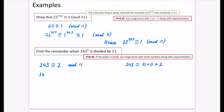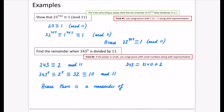So 343 to the power of 5 is congruent to 2 to the power of 5. Now 2 to the power of 5 is 32. And 32 mod 11: we take away 22 (since 2 lots of 11 is 22), so 32 is congruent to 10 mod 11. Hence, there is a remainder of 10 when divided by 11.